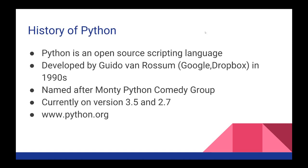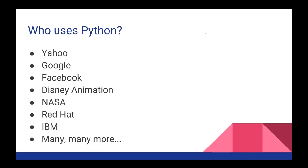Let's talk about who uses Python. This is just a very short list of a ton of people that use Python. All the major companies in the tech sector probably use Python — companies such as Yahoo, Google, Facebook, Disney Animation, NASA, Red Hat, IBM, and many more. Sites such as Reddit are run on Python, and their source code is all open source. If you want to figure out more about how they use Python at reddit.com, you can go to their GitHub repository and see their code.